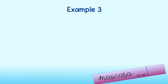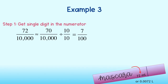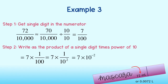Let's take a look at one more example. This mascara is seventy-two milliliters, or seventy-two ten-thousandths liters. We can write this as a fraction and estimate it by first getting a single digit in the numerator. We round the numerator down to seventy, then divide both numerator and denominator by ten to get seven one-hundredths. Writing it as a multiplication problem, we get seven times one-hundredth, or seven times one over ten to the second power. Using our rule of negative exponents, we get seven times ten to the negative second power. Seventy-two milliliters is approximately seven times ten to the negative second liters.